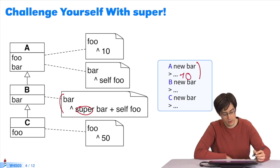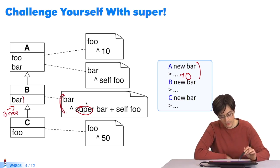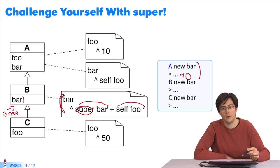In the case of b new bar, let's look at each step. We send the message bar to the b new object. The lookup algorithm seeks the method bar, starting with the object class. It finds the method bar. It is executed on the receiver. This bar method is executed on the receiver. Now I have to compute super bar and self foo and add them together. We can do self foo.